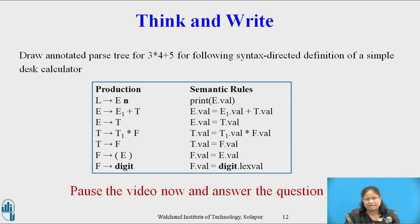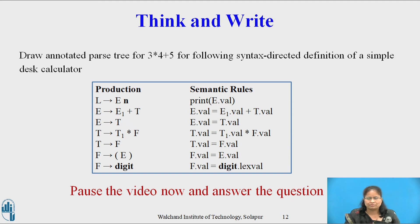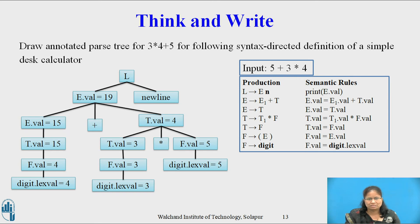We have covered the Syntax Directed Definition and synthesized attribute along with the example. Now pause this video and reflect on this question: draw the annotated parse tree for 5 + 3 × 4 for the following Syntax Directed Definition of a simple desk calculator. For the example 5 + 3 × 4 followed by a newline, the annotated parse tree is given which prints the value 19, with the output at the root being the value of E.val at the first child of the root.